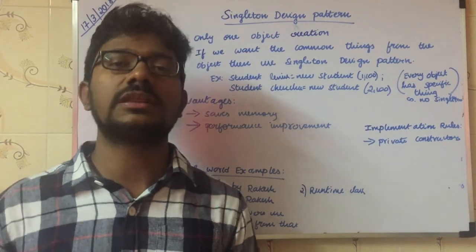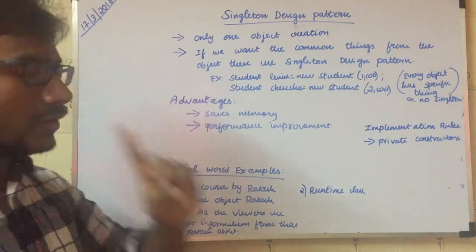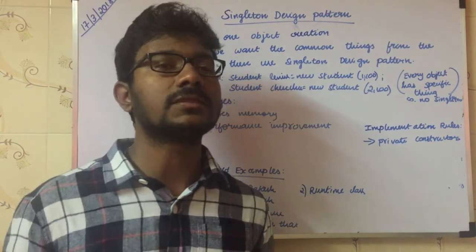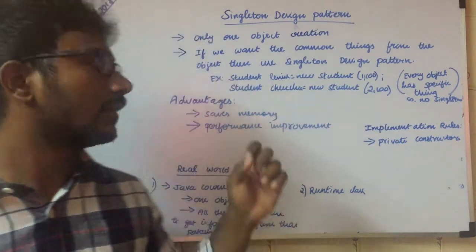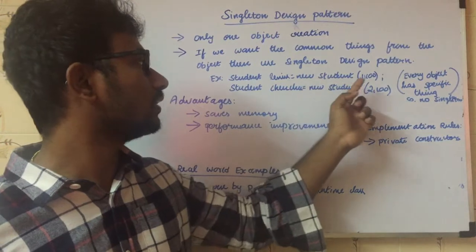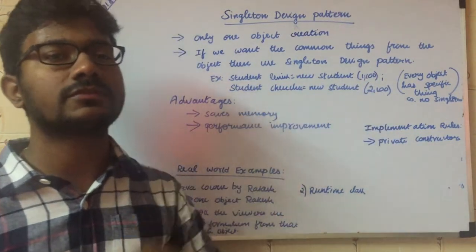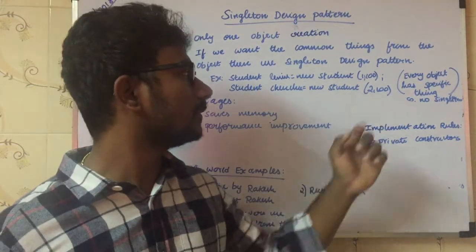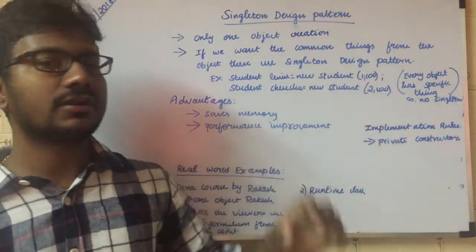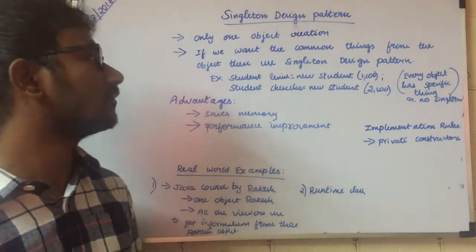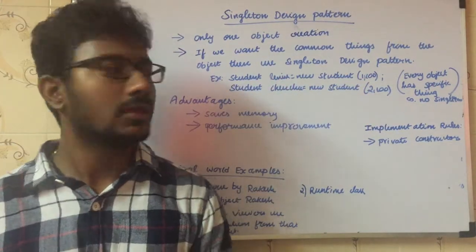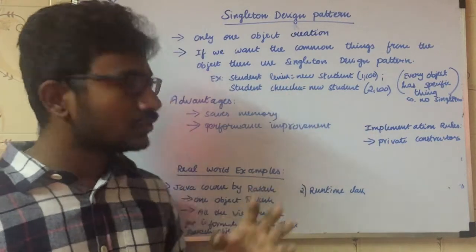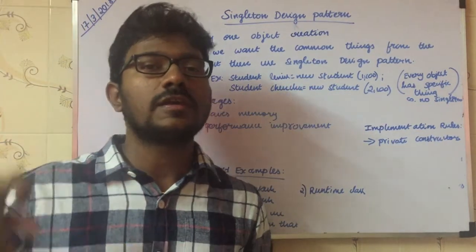There are some rules for when we should and shouldn't use Singleton. The first rule: if an object has its own specific properties, we shouldn't use Singleton. For example, consider: Student lenin = new Student(1, marks) and Student chenchu = new Student(2, marks). Here, roll number 1 and its marks are specific properties for the 'Lenin' object, and roll number 2 and its marks are specific properties for the 'Chenchu' object.